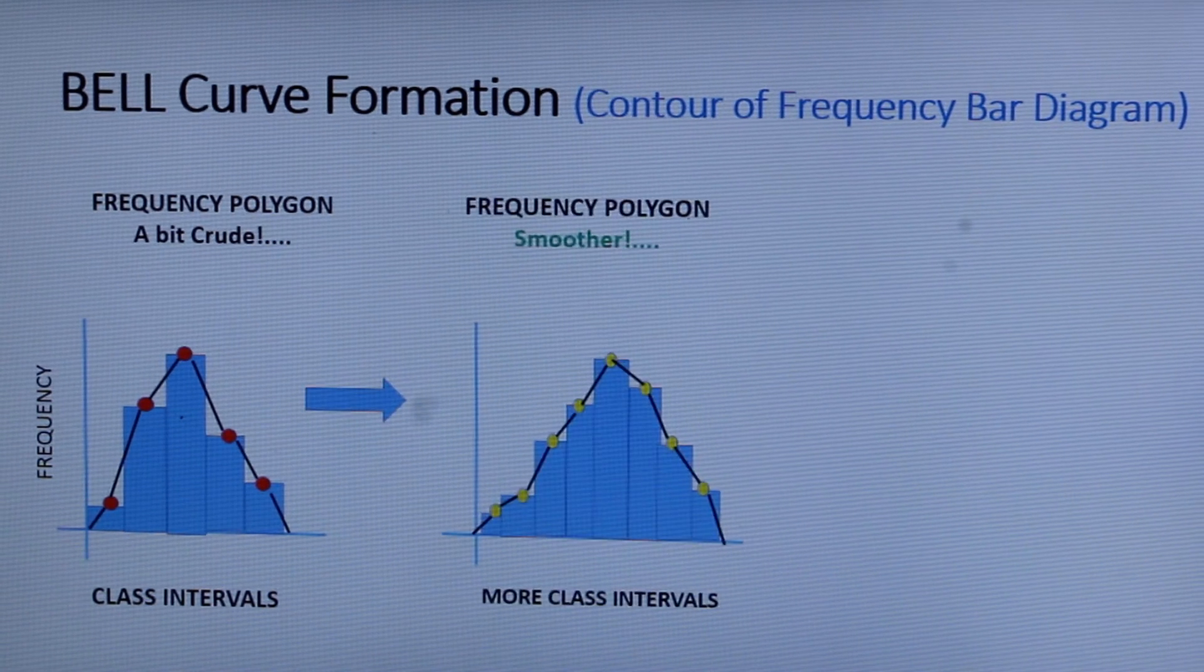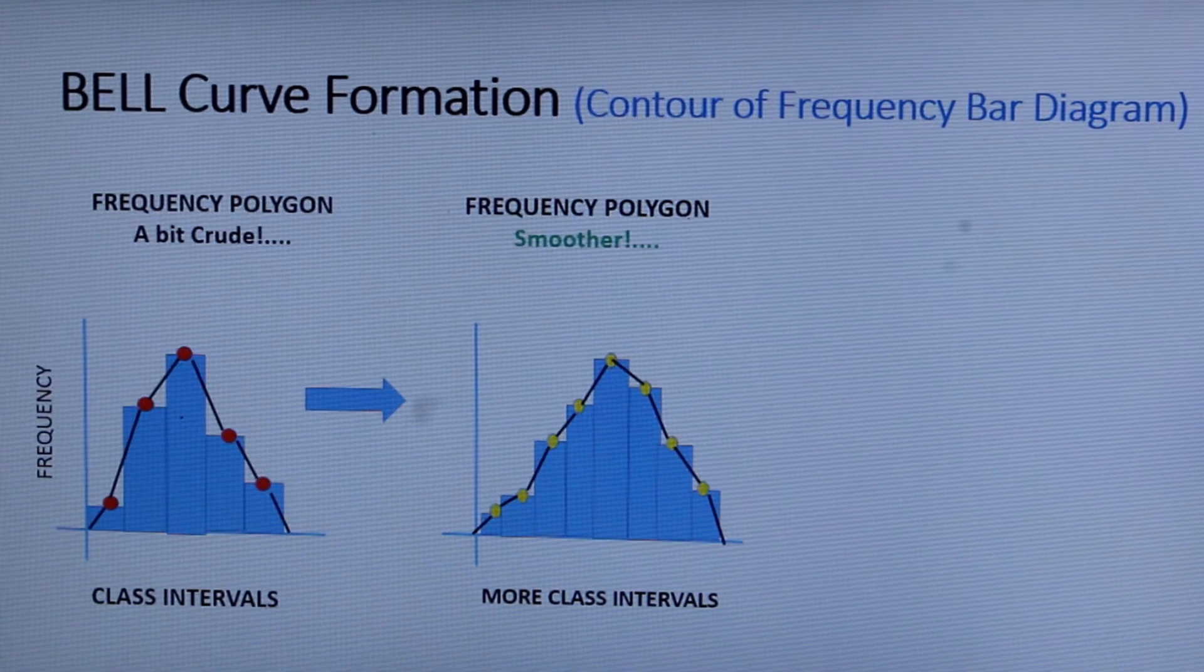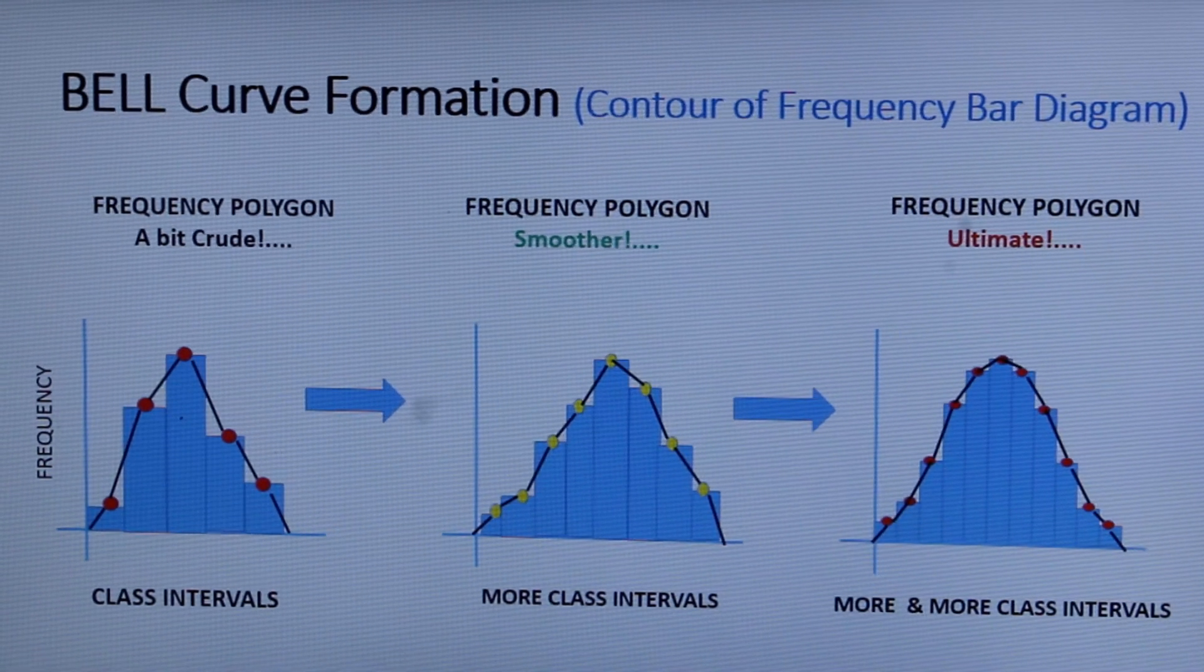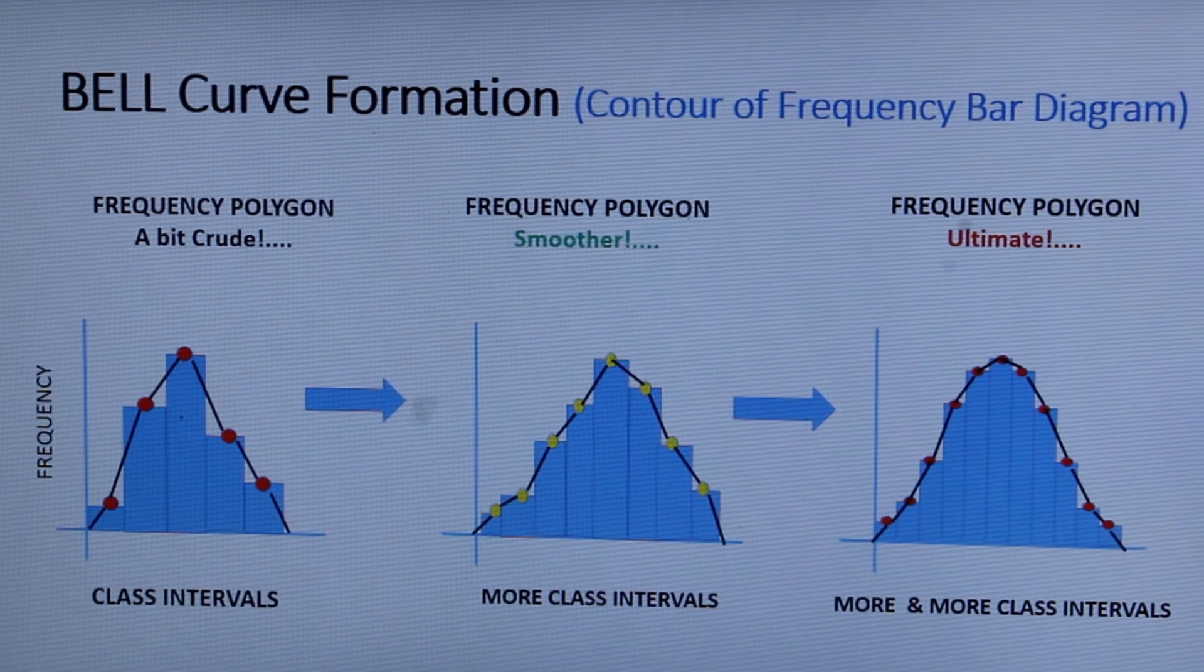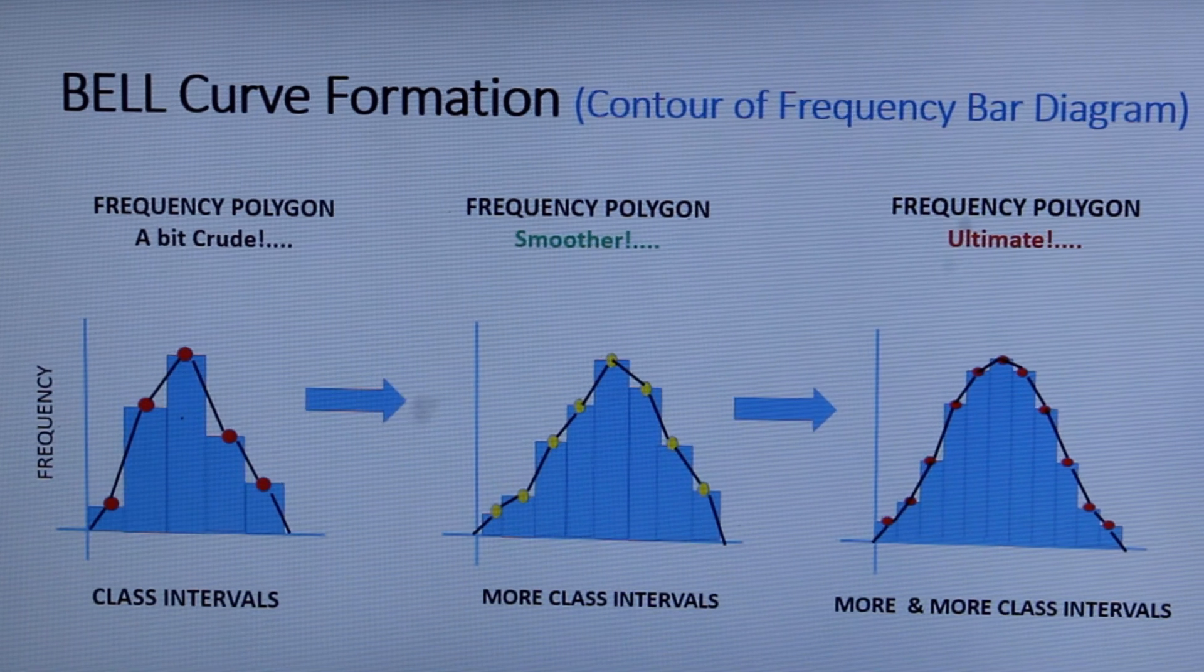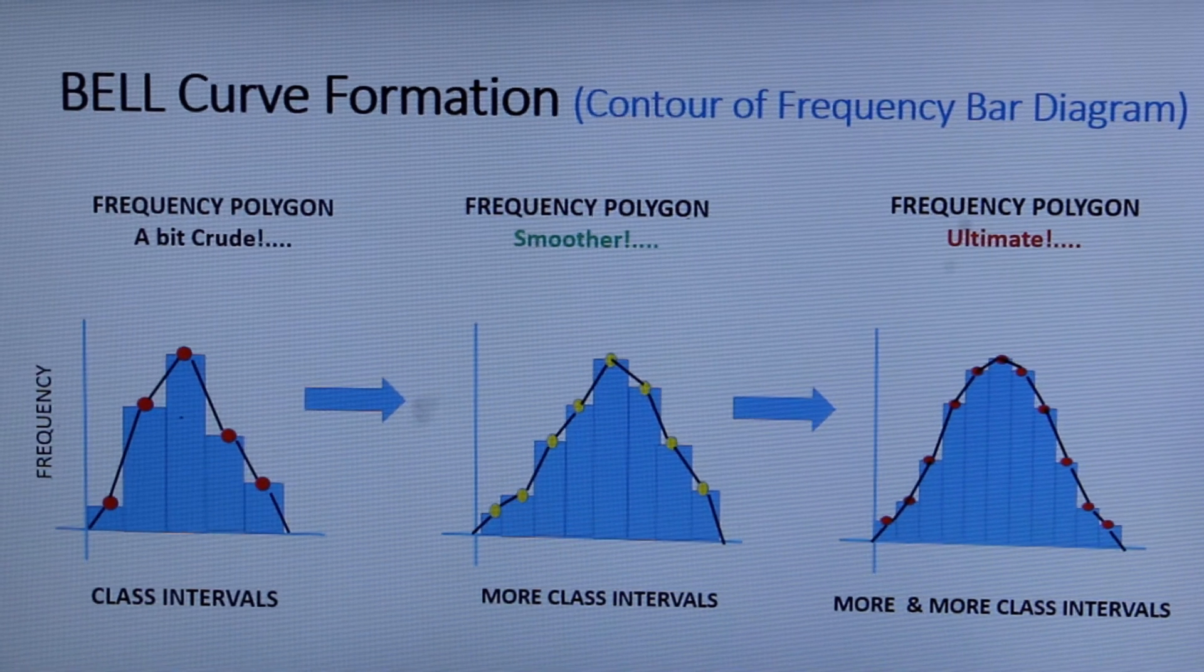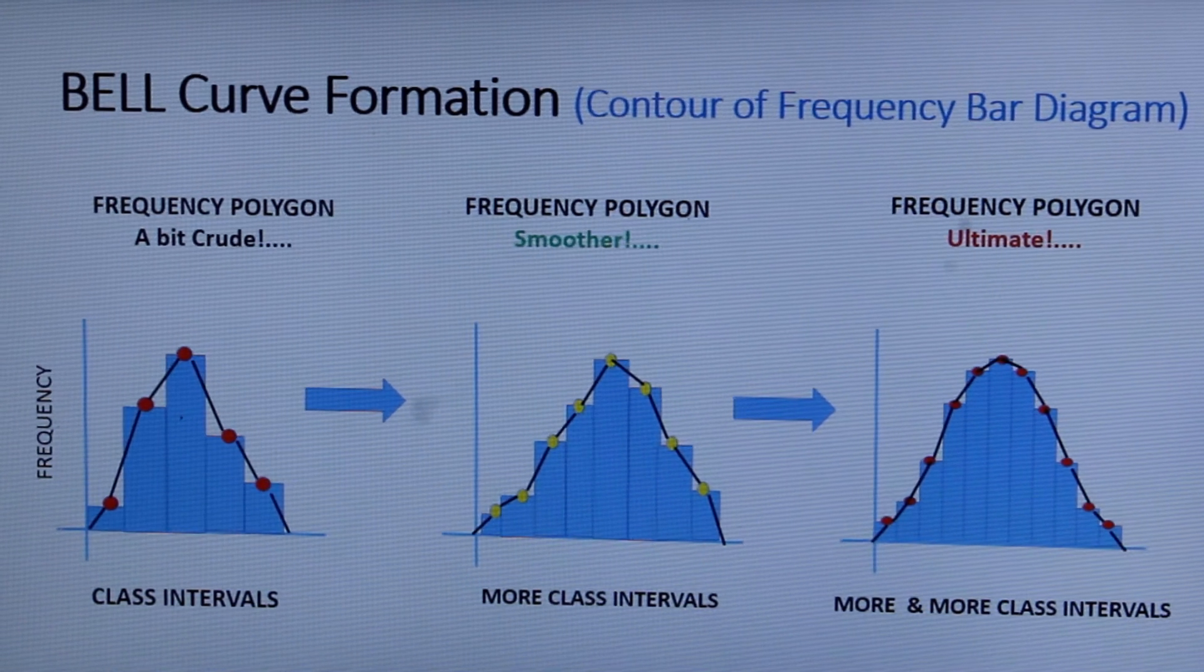The frequency polygon also becomes smoother as we see in the second one. Ultimately if you have more and more data points and you are able to divide more class intervals, the frequency polygon itself almost looks like a bell curve. So the bell curve is the evaluate of frequency distribution. That means it is a contour that touches the top points of the frequency bar diagram.